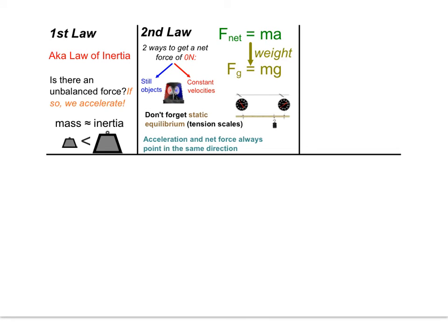The last part of Newton's second law that we should probably remember is that acceleration and net force will always point the same way, but they don't have to point the same way as velocity. So you could be slowing down and have your acceleration and net force point the opposite way of your velocity, or you could be speeding up and have them all point in the same direction.